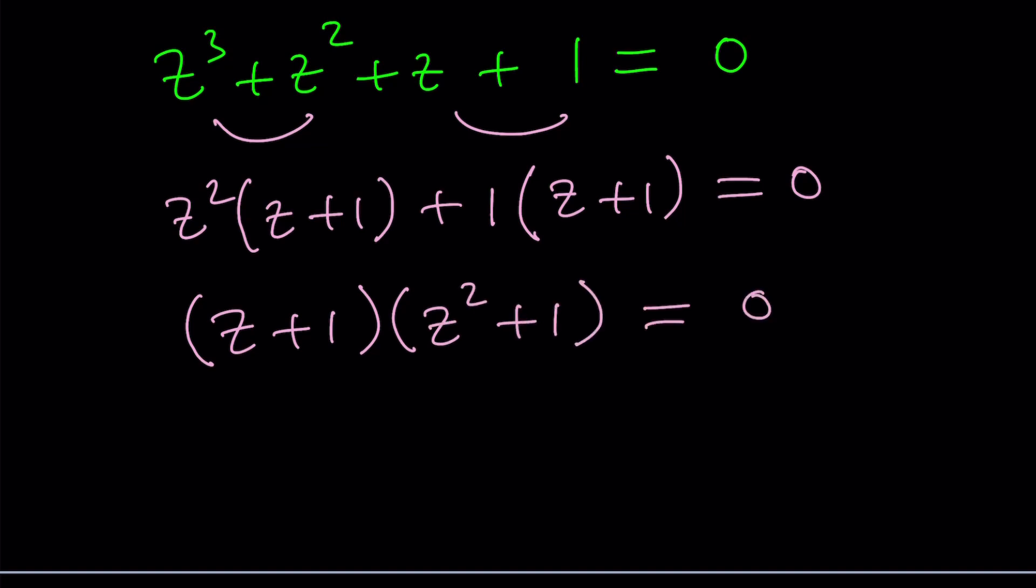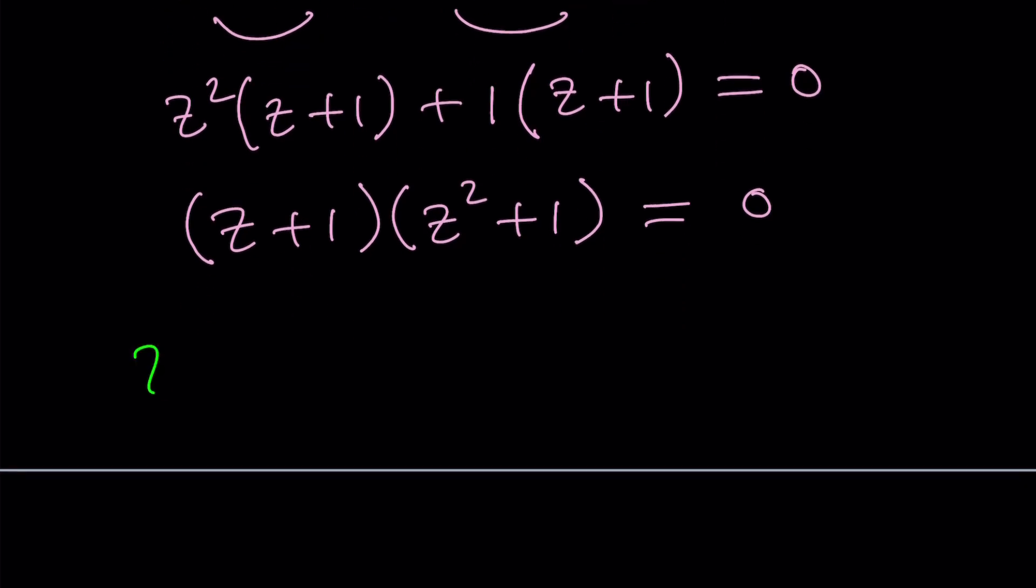And then now z plus 1 is a common factor. And then we're going to set each factor equal to 0 to find the solutions.